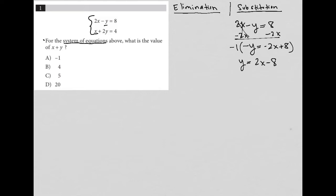I go down to my second equation, which is x plus 2y equals 4. And I can take all of this and substitute out the y value in the second equation. So that will turn into x plus 2, parentheses, 2x minus 8 equals 4.